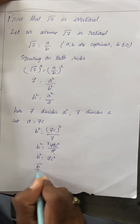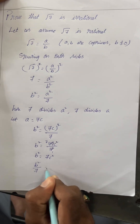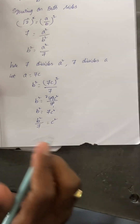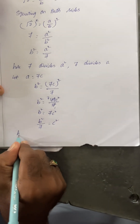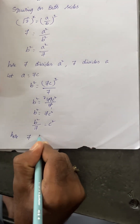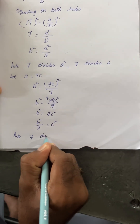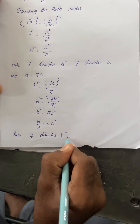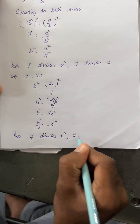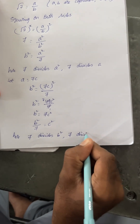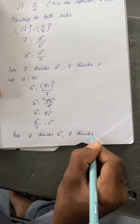Transposing: b square by 7 is equal to c square. Here, 7 divides b square, and therefore 7 divides b also, according to the theorem.